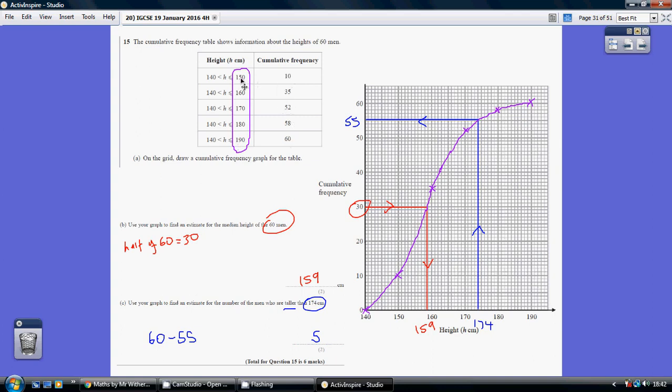So you're plotting 150 and 10, 160 and 35, 170 and 52, etc. Also bear in mind that no heights are below 140, so we have the 140 zero as an opening point.